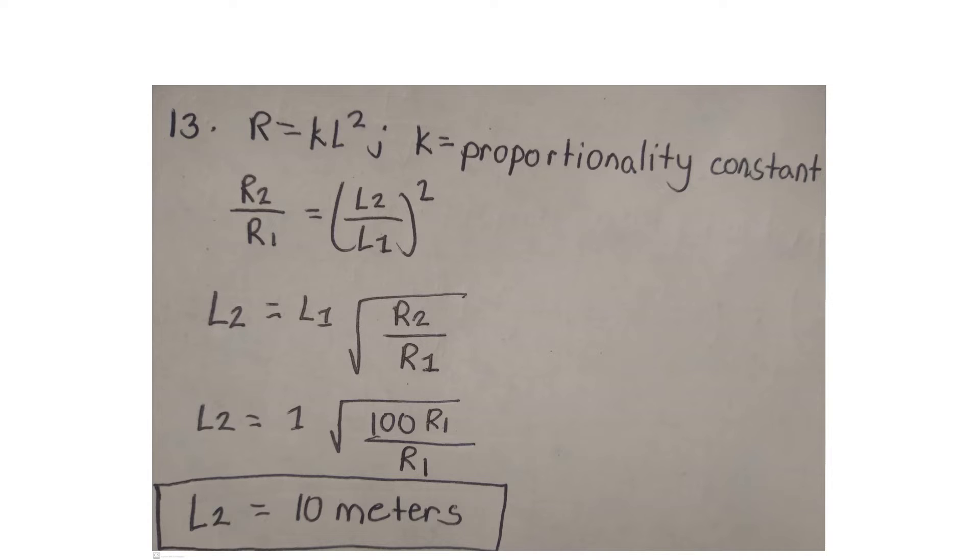And it would be R2 over R1 is equal to L2 over L1, open close parenthesis, squared. Since we are asked to find the final length,